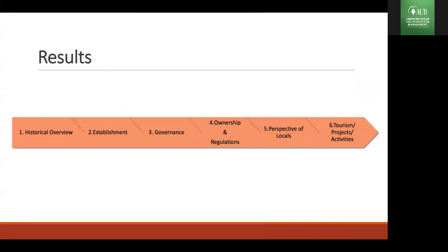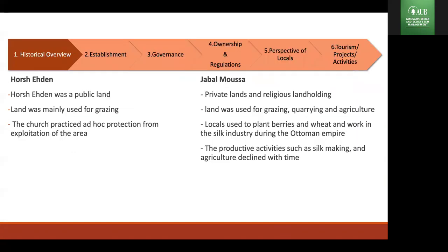From my interviews I identified six result categories. The first is historical overview. Hirsh Ehdin used to be public land used mainly for grazing, and because it was located in a Christian area, the church practiced ad-hoc protection from exploitation. Unlike Hirsh Ehdin, Jabal Musa is private and religious landholding. The land was used for grazing, coring, and agriculture. Locals used to plant wheat and work in the silk industry during the Ottoman Empire, but many of these activities decreased with time.